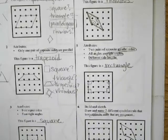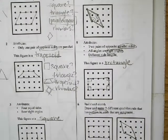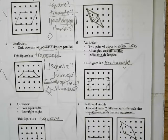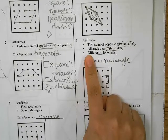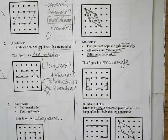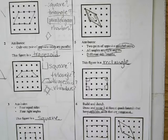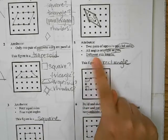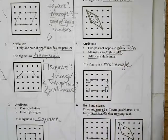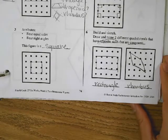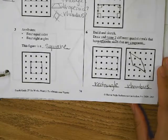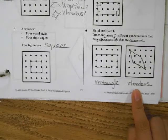Now we have two pairs of opposite parallel sides, all angles are right angles, and there's different side lengths. Like I said, the only two shapes that have all right angles are rectangle and square. We already did a square, and the only one that has different side lengths is a rectangle. Then it says, 'Draw and name two different quadrilaterals that have opposite sides that are congruent.' That could be a lot of them, but we chose rectangle and rhombus.